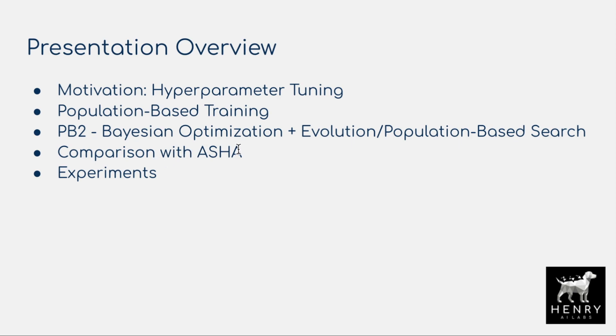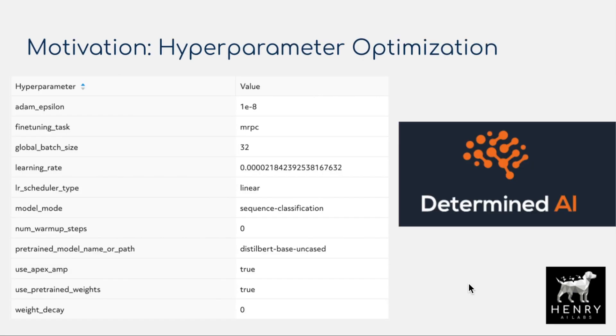ASHA is a really strong baseline for hyperparameter tuning. ASHA is great because Bayesian optimization requires a synchronized controller, making it harder to parallelize. ASHA is a way to do resource allocation without a centralized controller that requires all distributed training systems to sync up. Then we'll look at the experiments with on-policy and off-policy learning, showing how PB2 improves efficiency for robotic control compared to the original population-based training.